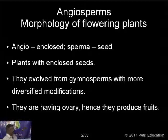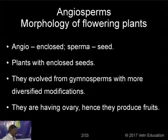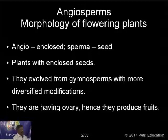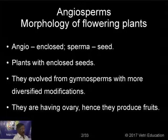Angiosperms evolved from the gymnosperms with more diverse modifications. They have an ovary, hence they produce fruits. Since they have the ovary, they produce fruits, and inside the fruits they have seeds. So the seeds are protected inside the ovary.